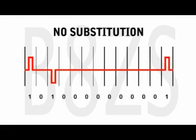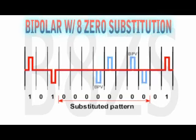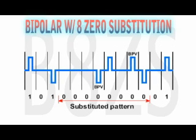Used like an expansion pack with AMI, Bipolar 8-zero substitution, or B8ZS, fixes this issue. When a binary code has a string of eight zeros, alternating polar values are added in the fourth and seventh positions. The result is a clear channel for communication.